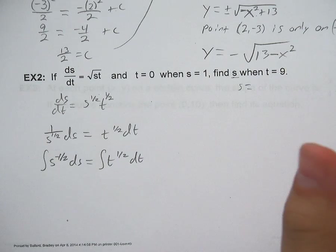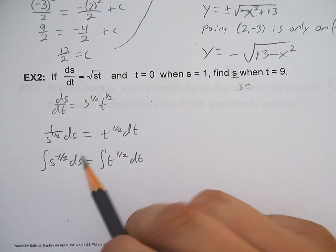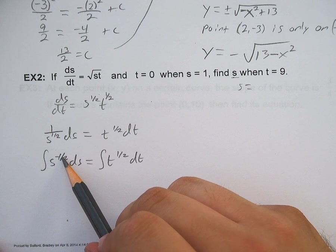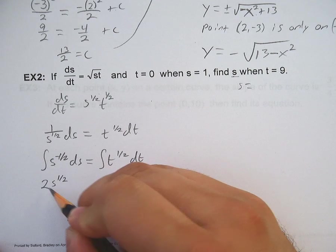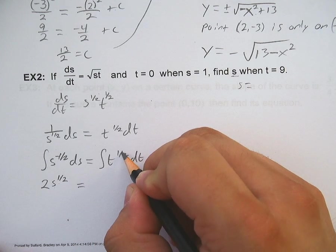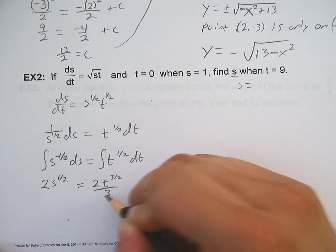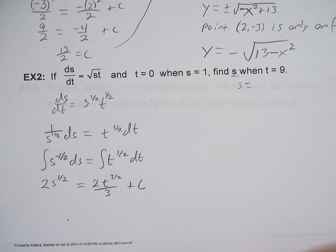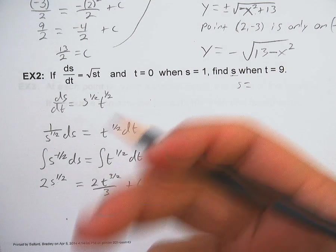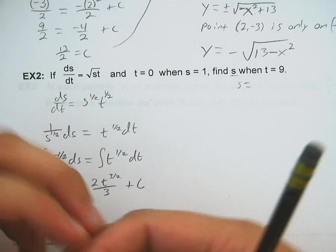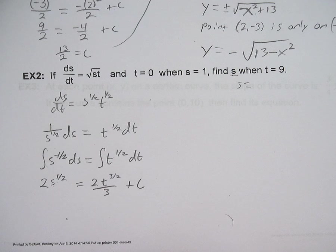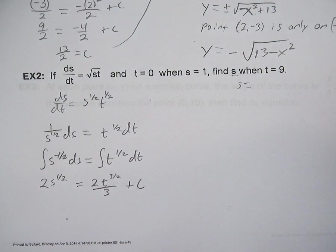And now I can integrate. I've separated my variables. I've separated my ds and my dt. Now I can integrate. The integral of s^(-1/2) is going to be s^(1/2) over 1/2, which is 2. So 2s^(1/2) equals t^(3/2) over 3/2, or 2t^(3/2) over 3 plus c. Now, why do I not plus c on the left? Well, because if I do, I can just subtract it over here and I don't have to worry about it. It's still just plus c. Whatever c is, it doesn't matter to me. As long as I add a constant somewhere in the equation, then calculus still happened.